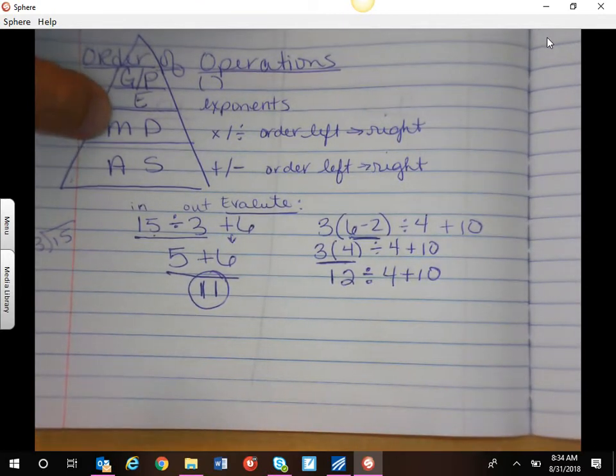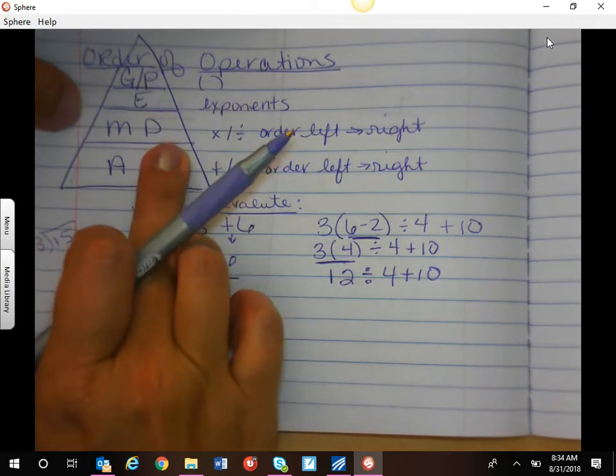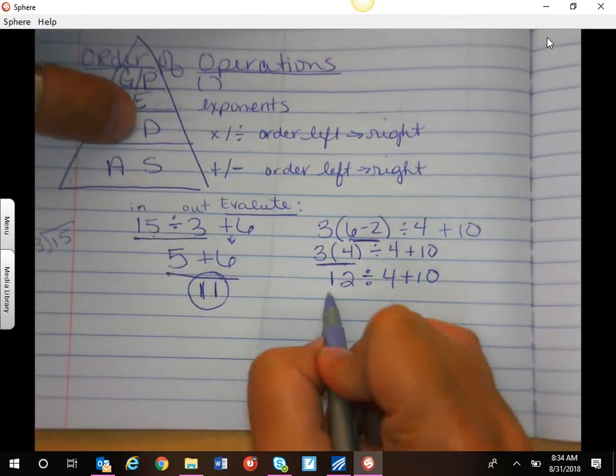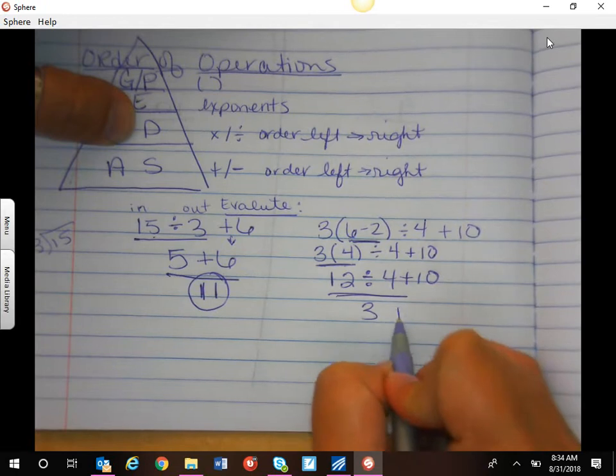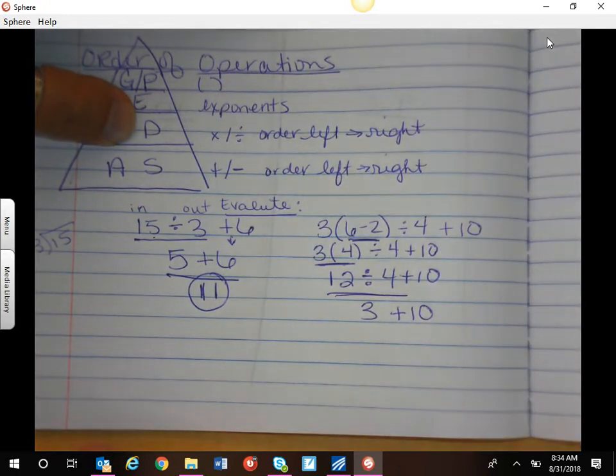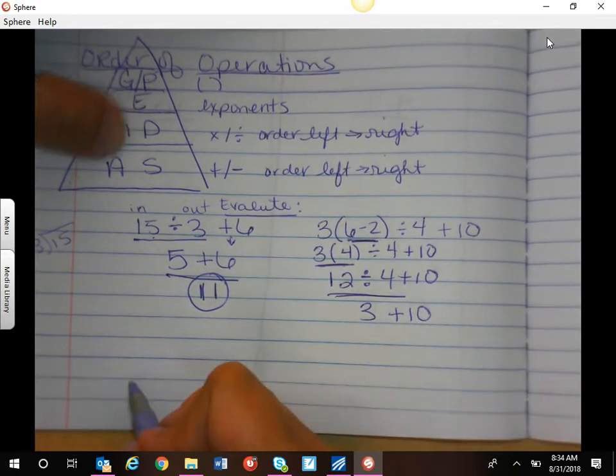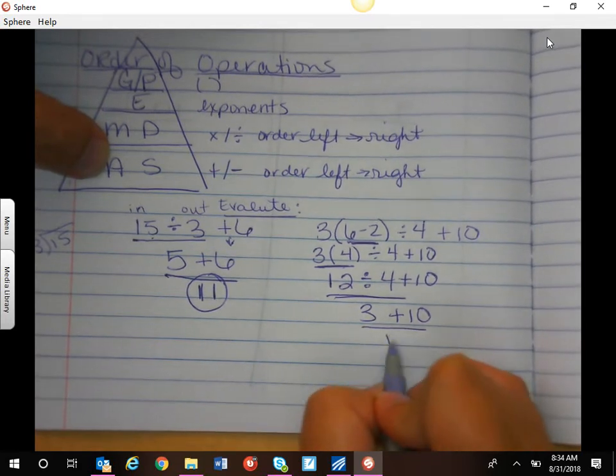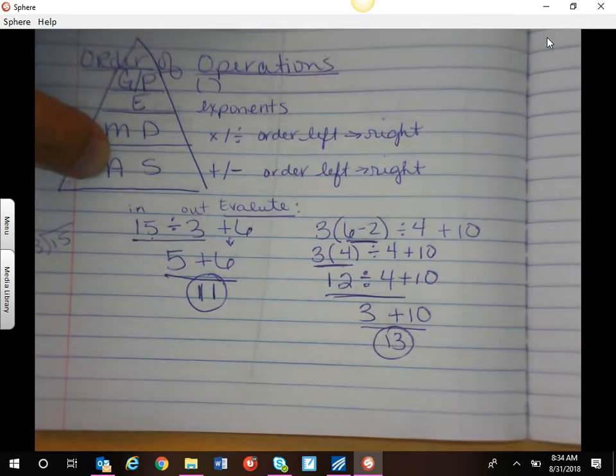Now, I'm not actually done with this level. I still have a division. 12 divided by 4 equals 3, plus 10. I'm bringing this down. And then I can do my addition for 13. And that is order of operations.